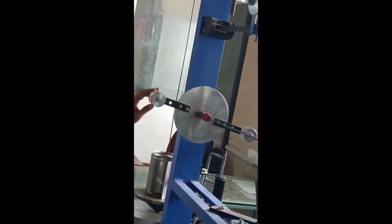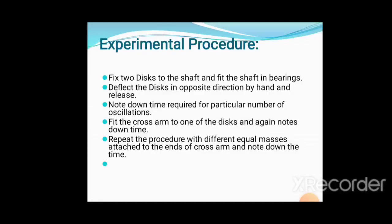Note the oscillations carefully. Fit the cross arm with masses at different positions: zero level, r1 level, and r2 level. Note down the time and repeat the procedure for all positions.